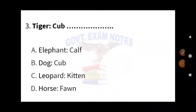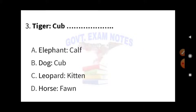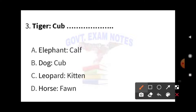Next question: if tiger is to cub, then what will be the correct answer among these four options? We need to see the relation between tiger and cub. The baby of tiger is called cub. So similarly, the little one of elephant is called calf, which is option number two — the right answer.